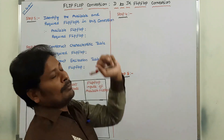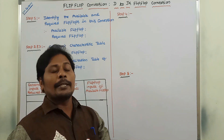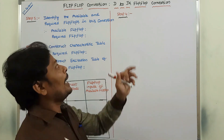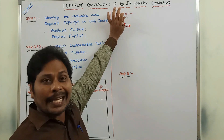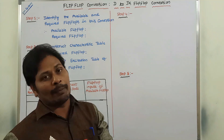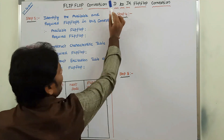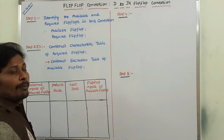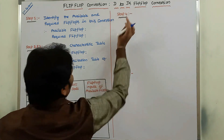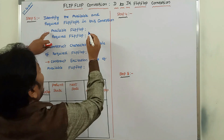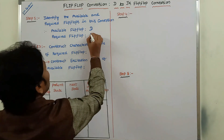To convert from D flip-flop to JK flip-flop, we have to follow 5 steps. The first step is to identify which one is the available flip-flop and which one is the required flip-flop among these two flip-flops. So here, whatever the given flip-flop is there, that flip-flop is called the available flip-flop. Here D flip-flop is given. From that one we have to find out JK flip-flop. So available flip-flop is D flip-flop and required flip-flop is JK flip-flop.